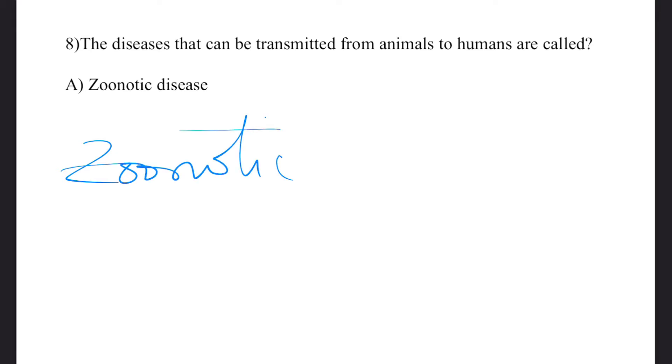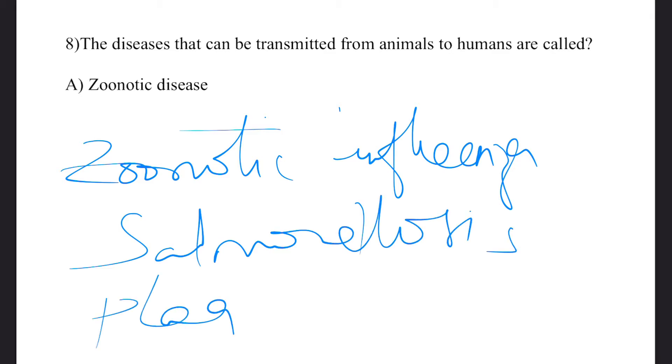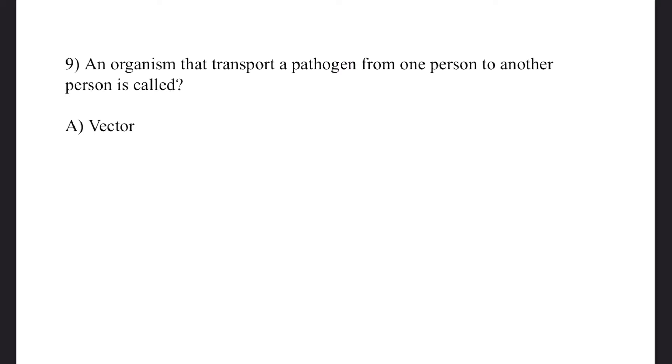salmonellosis, plague, severe acute respiratory syndrome, and many others. I'm listing some here. Moving to the next question - Question 9: An organism that transports a pathogen from one person to another person is called?